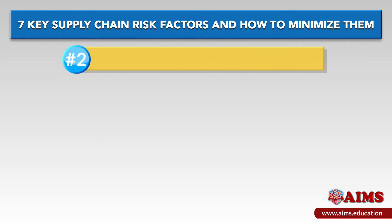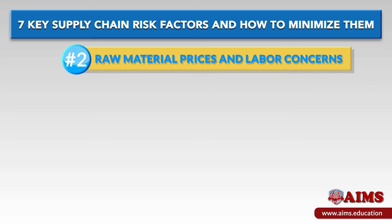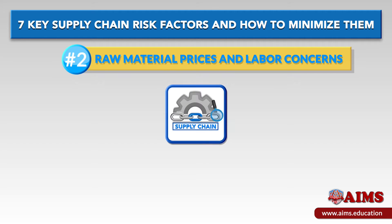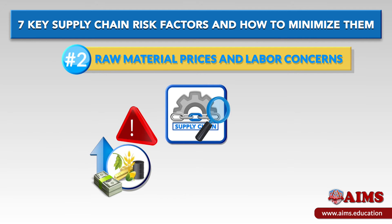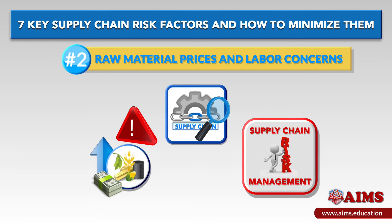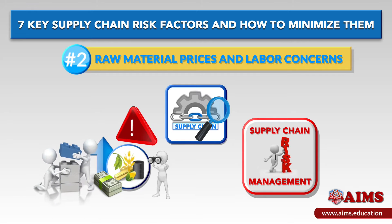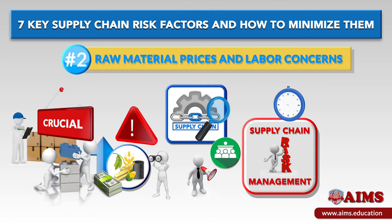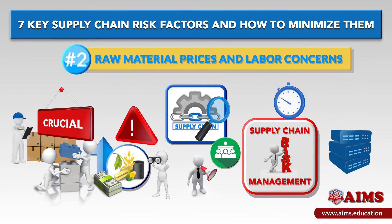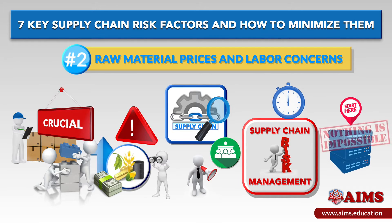Factor number two: raw material prices and labour concerns. Every supply chain focuses on a certain raw material price. If that price goes up, you can face some major issues. When you do supply chain risk management, you have to focus on raw materials. Labour problems can appear at all times for any supplier, so it's crucial to deal with them as fast as possible. With the right approach, you will see that nothing is impossible.